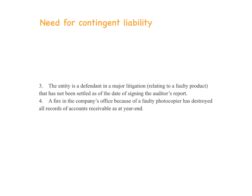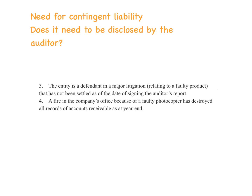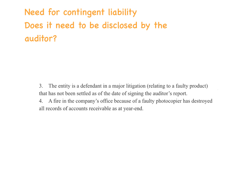Scenarios 3 and 4: the entity is a defendant in a major court case relating to a faulty product that was not settled. From subsequent events, there's going to be some form of contingent liability. The question becomes: is this information that needs to be disclosed? Does it need to be disclosed by the auditor?